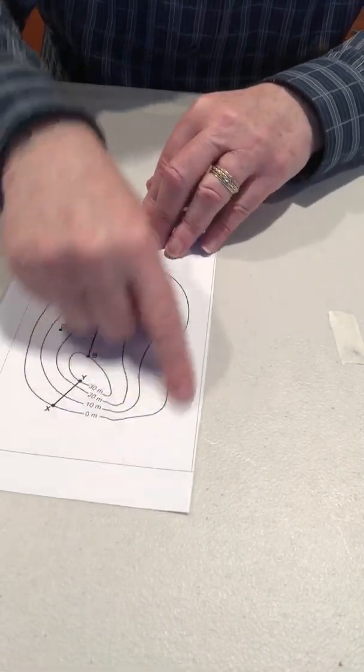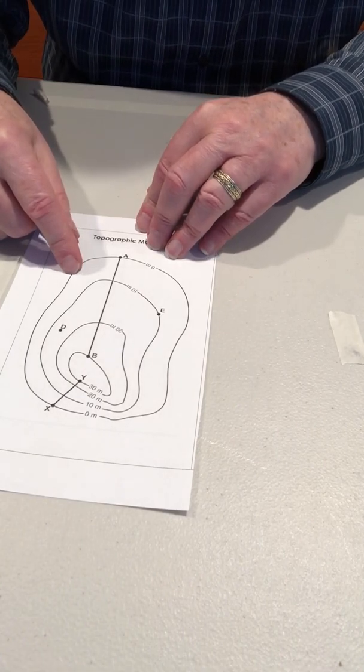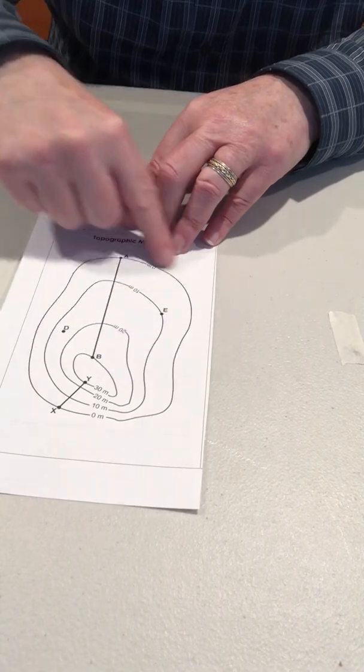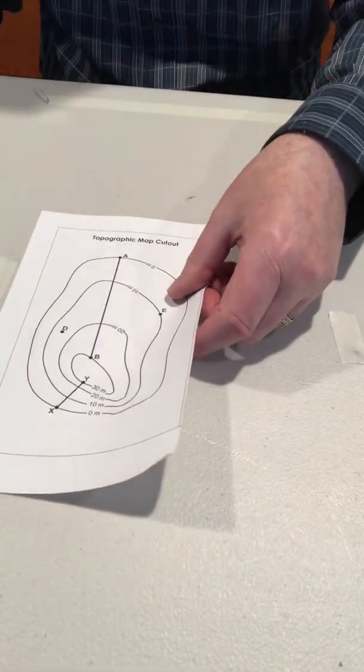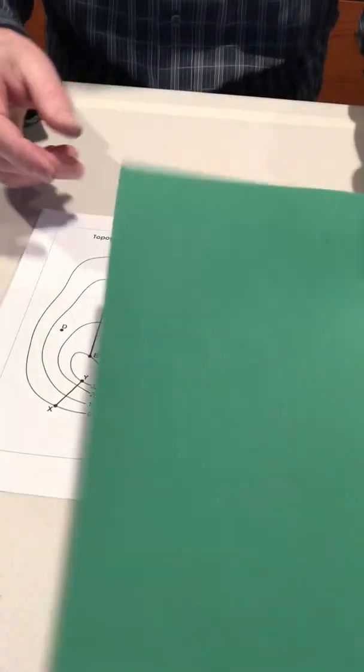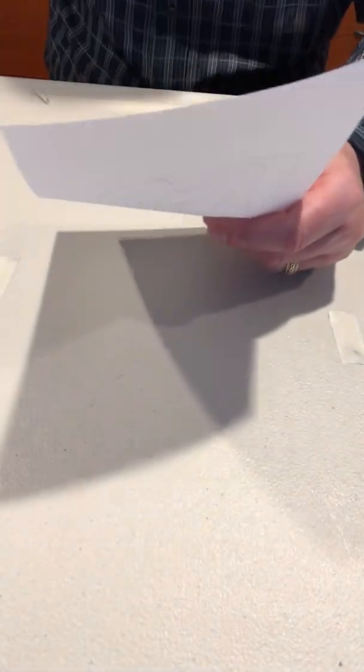Now that I have this separated, what I will do is I will cut out the first contour line, and that's going to create a template that I'll put on the green foam paper when I use it to cut it out.